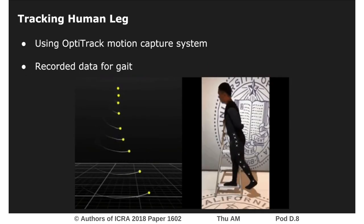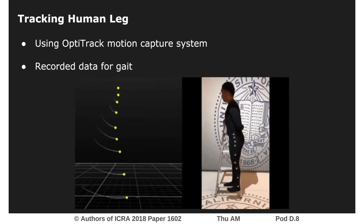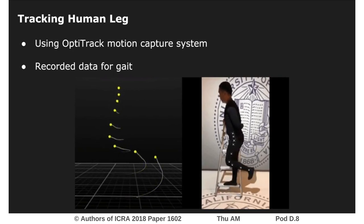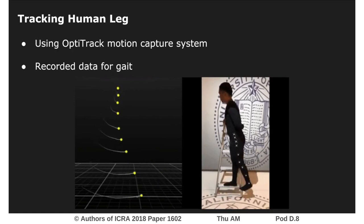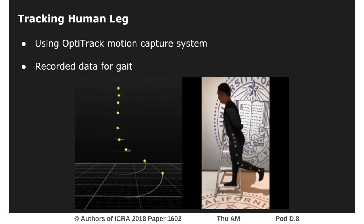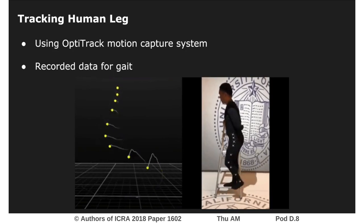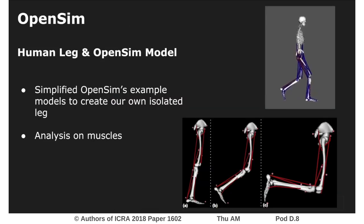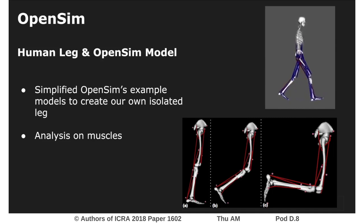Our research began with simply understanding the motions of gait with the human body. We began our experimentation by using the motion capture system OptiTrack to record one full cycle of in-place gait. OpenSim is a powerful simulator capable of analyzing the biomechanics of the human body.